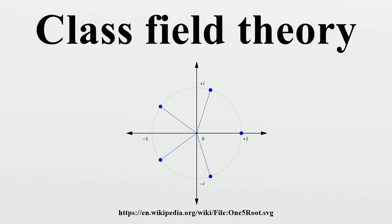A standard method since the 1930s is to develop local class field theory, which describes abelian extensions of completions of a global field, and then use it to construct global class field theory.